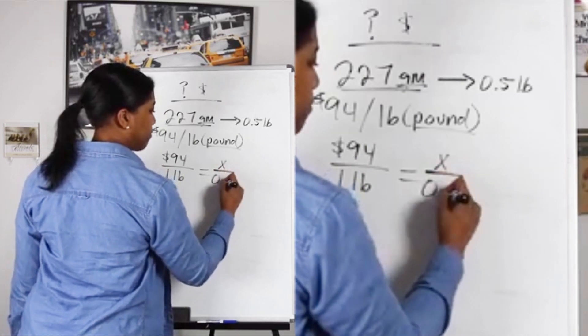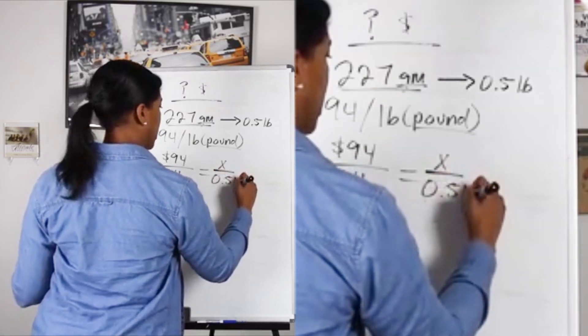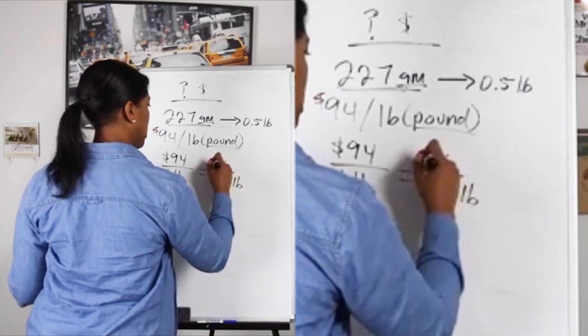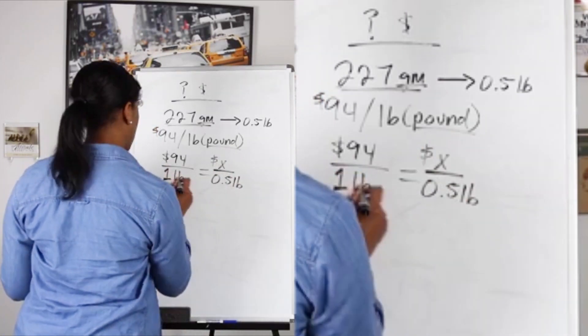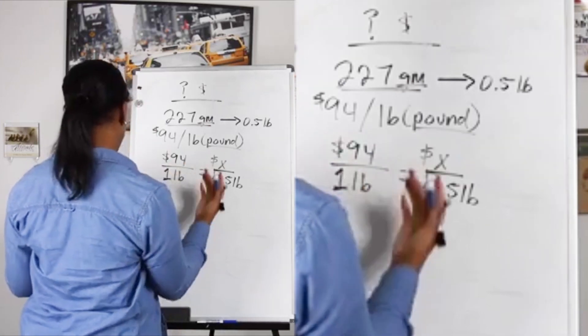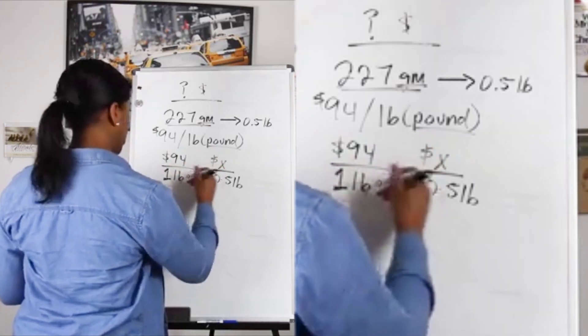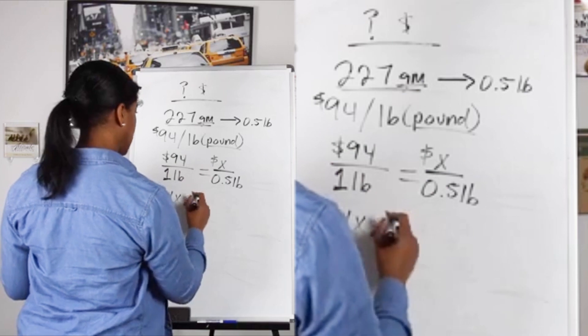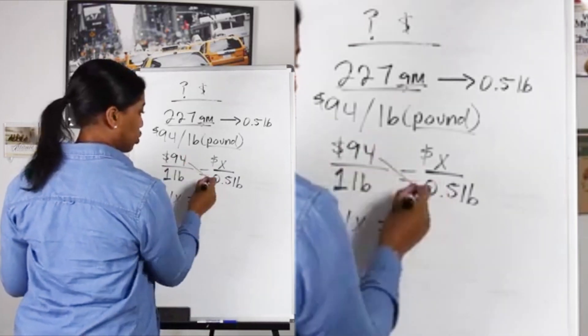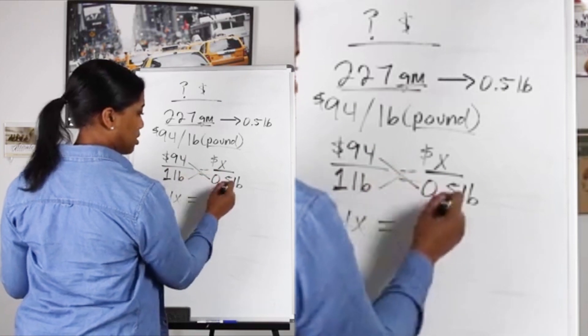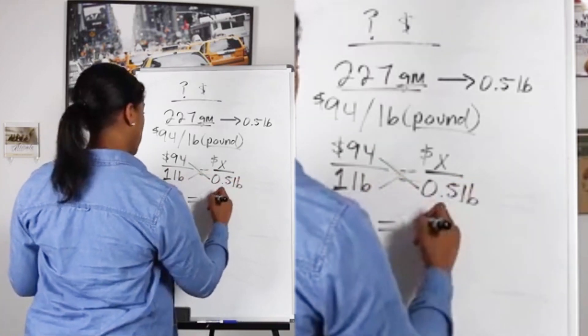will we have to pay for half of a pound? It's always good to put the units. Once you cross multiply and do the math, you should get 1x equals - it's going to be 94 times, because you're cross multiplying, 94 times 0.5, which you should get